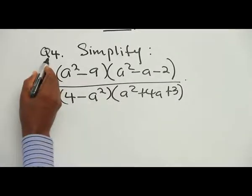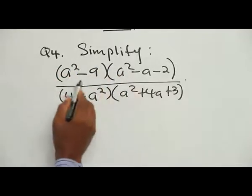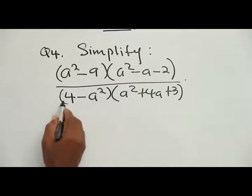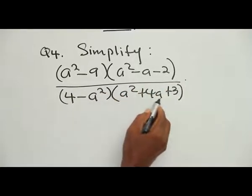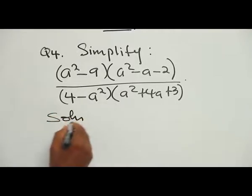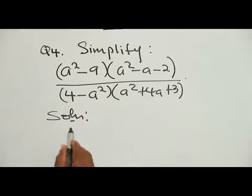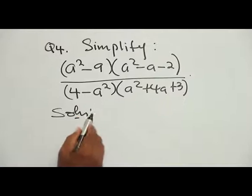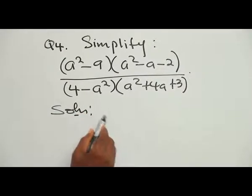Example number 4: Simplify (A squared minus 9)(A squared minus A minus 2) all over (4 minus A squared)(A squared plus 4A plus 3). One of the best ways to solve this problem is to have a good knowledge of factorization methods. Everything we are doing here is about factorization.